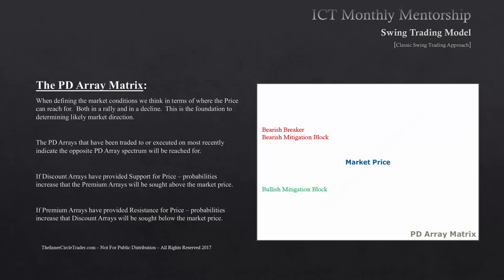Above you, look to see if there are any bearish breakers that have not yet been traded up to. Also above you, look for liquidity voids where price was quickly drawn lower or repriced aggressively fast, leaving a big range of only downside delivery. Conversely, look for any liquidity voids below you where price showed a strong willingness to rally quickly, leaving a porous wake of only buy-side delivery.